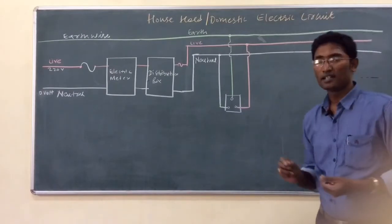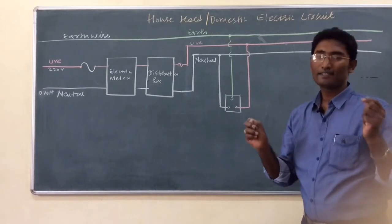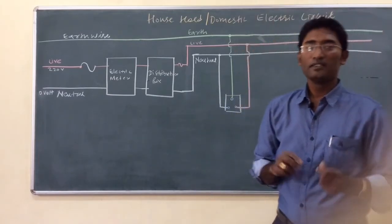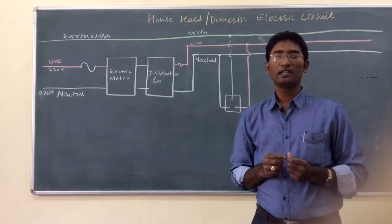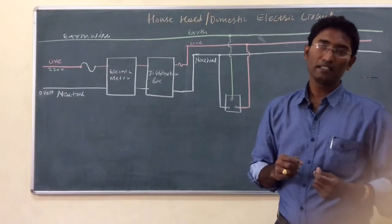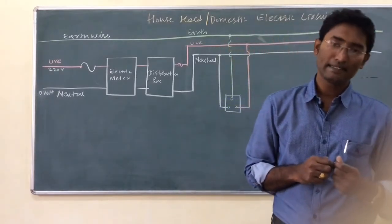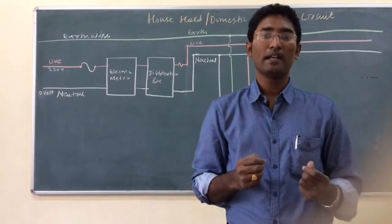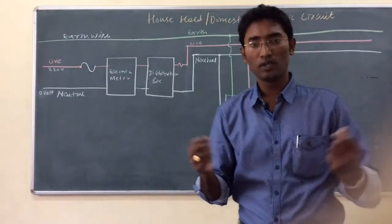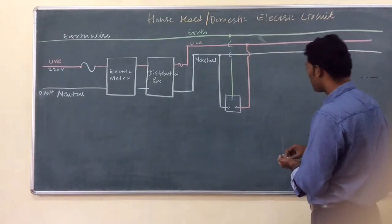All connections made in household electric circuits are parallel circuits — all appliances are connected in parallel in the domestic electric circuit. There are many advantages of this: all appliances get the same potential difference at the same time, and if any one appliance fails, all other appliances will not be affected and will work normally.